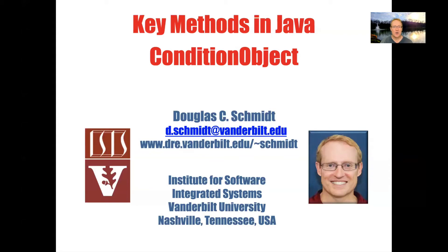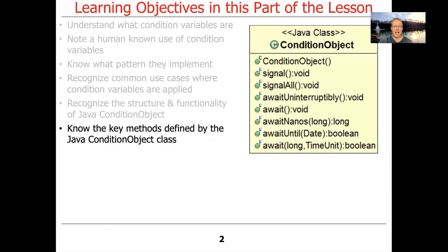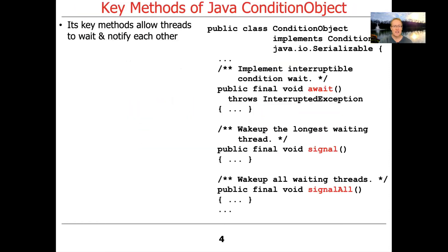We're now going to turn our attention to an analysis of some of the key methods in the Java ConditionObject class. The bulk of these methods are inherited from the condition interface. In particular, it has three primary methods that are the most important ones to focus on, and these methods allow threads to wait and notify each other. Those methods are await, signal, and signalAll.